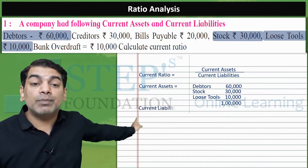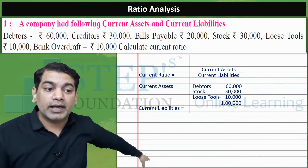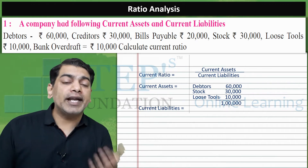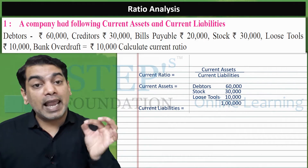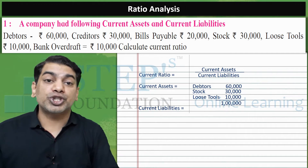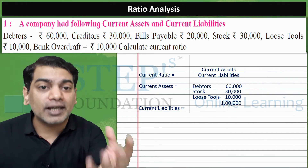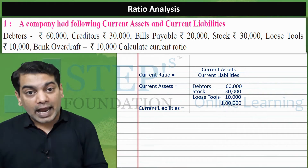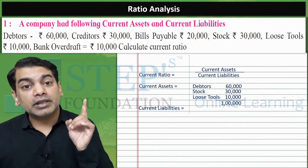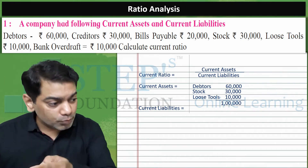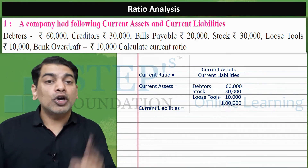Current liabilities means all those liabilities which are payable in the short term. Liability means money owed — current liability means those liabilities which are repayable within a few months. Going back to the question: creditor — is creditor a current liability? Yes. Creditor is my liability because we bought goods on credit and need to repay in a few months, so creditor is my current liability.